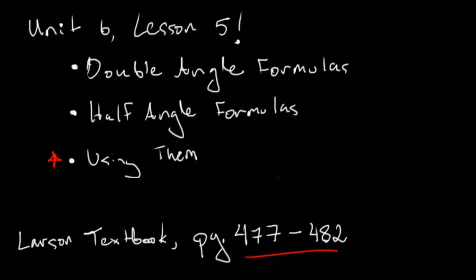We are going to be looking at the double angle formulas, the half angle formulas, and we're going to use them for sine, cosine, and tangent. You can find this information in the textbook on page 477 to 482. No obligation to go there, but it's always nice to see someone else explain something to get things in multiple ways. So let's go ahead and get started.